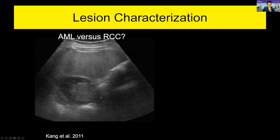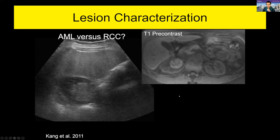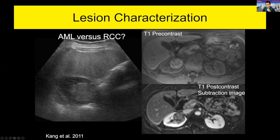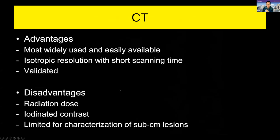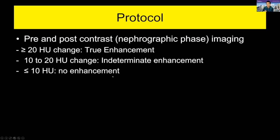A solid renal mass in the right kidney with an echogenic lesion raises the question: is it echogenic enough to be confident it contains bulk fat and hence is a benign angiomyolipoma, or is the echogenicity insufficient? On T1-weighted pre-contrast MRI, a T1 hyperintense lesion without bulk fat can be an oncocytic tumour with enhancement on subtraction images — a non-bulk-fat-containing solid enhancing lesion historically deemed surgical. CT is the most widely used imaging modality, the most validated for renal lesions, providing isotropic resolution with short scanning time. Disadvantages include requirement for iodinated contrast and radiation dose.